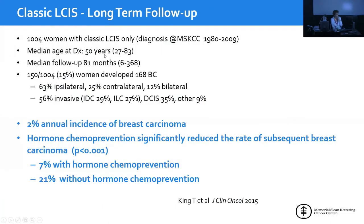A study from Tari King at our institution evaluated 1,000 women diagnosed at our center. At follow-up, there was a 2% annual incidence of breast carcinoma, but hormone chemoprevention was significant in reducing the rate — women who took hormonal chemoprevention had only a 7% rate of carcinoma compared to 21% for women who didn't take it. So hormonal therapy is useful for women with classic lobular neoplasia.